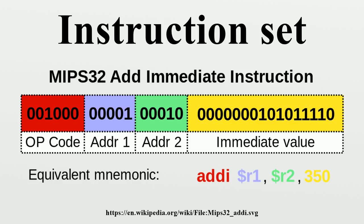Some architectures, such as the ARM with Thumb extension, have mixed variable encoding — two fixed encodings, usually 32-bit and 16-bit, where instructions cannot be mixed freely but must be switched between on a branch. A RISC instruction set normally has a fixed instruction width, whereas a typical CISC instruction set may have instructions of widely varying length. Fixed-width instructions are less complicated to handle than variable-width instructions and are therefore somewhat easier to optimize for speed.